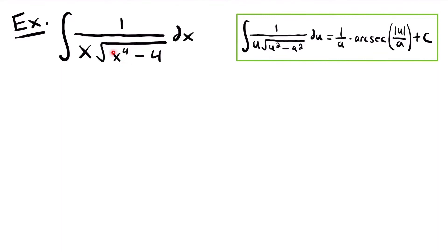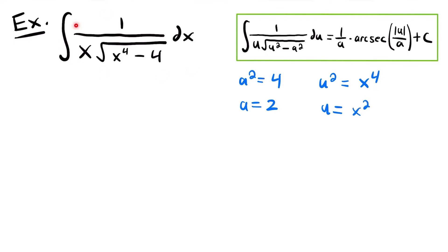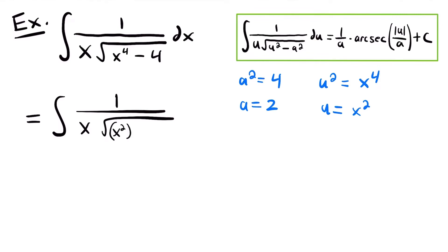We set a squared equal to 4 and u squared equal to x to the fourth power. Taking square roots, a equals 2 and u equals x squared. Rewriting the integral, we have the integral of 1 divided by x times the square root of x squared squared minus 2 squared dx. However, notice that u is x squared, but the function on the outside of the square root in the denominator is just x — they need to match.